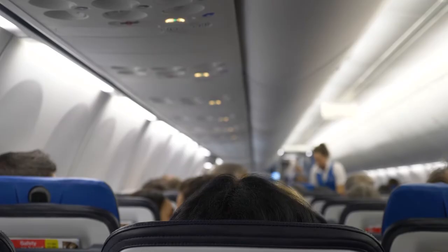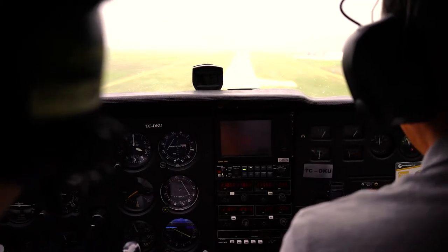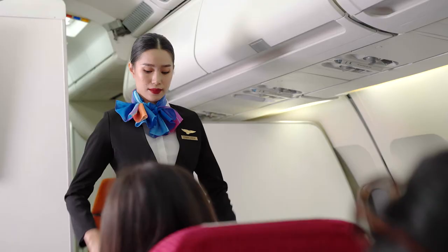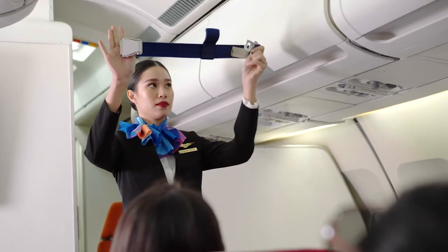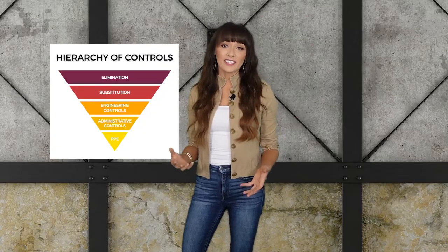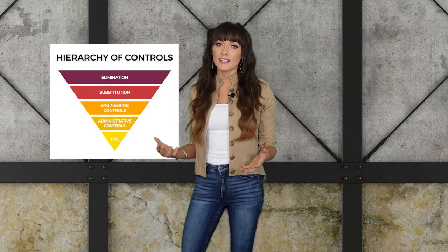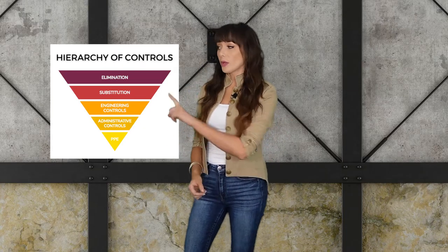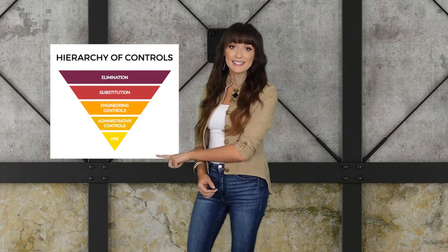When it comes to controlling hazards, not all methods are created equally. If you think about it, if you're on a flight, would you rather have an airplane that has automated backup landing systems just in case the pilot makes a mistake? Or would you prefer that they skip that step and just provide an upgraded seat belt? The hierarchy of controls sounds like a complicated system, but it's all just a list of ways to control hazards, going from the most effective to the least effective.